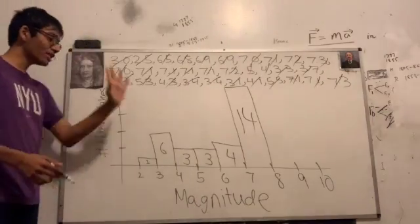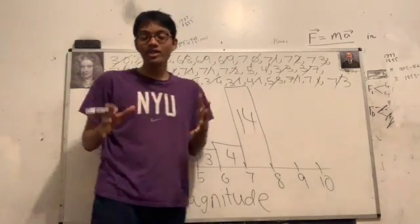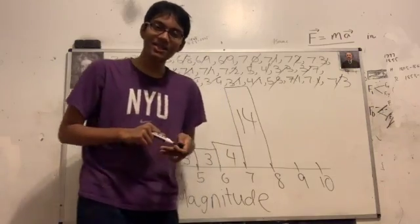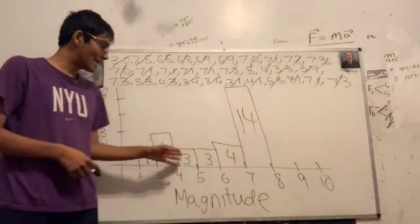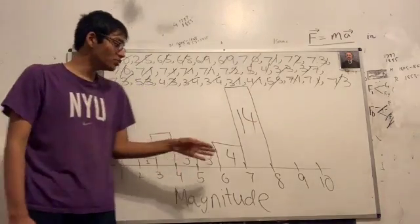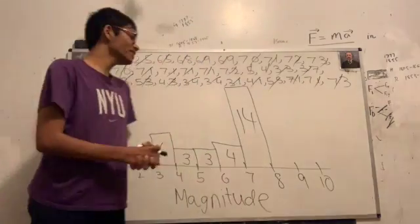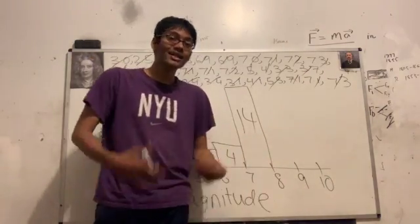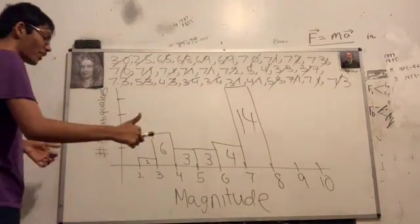And that right there folks is our histogram. Now, you might be noticing quite a few differences between a histogram and a bar chart. Let's go ahead and identify those differences. Number one, you'll see that there is no gaps between the actual bars. Why is that? Well, any gaps you notice in a histogram are actual gaps in the data. For example, there's no earthquakes with magnitude between eight and nine. That's why we don't have any bars there. That's why there's a gap there.